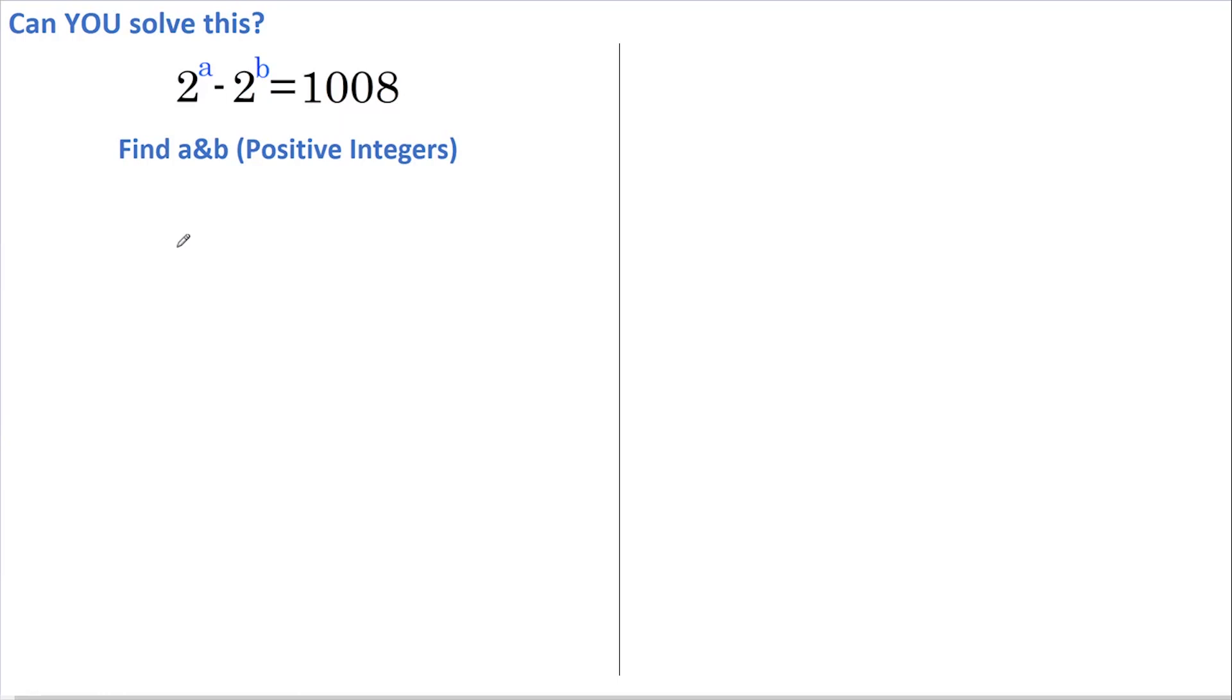Hi there, welcome back. Can you find a and b in the equation 2 to the power of a less 2 to the power of b equals 1008, given that a and b are both positive integers?